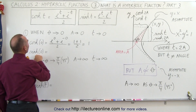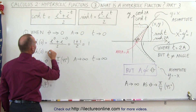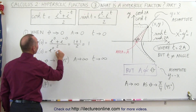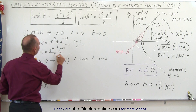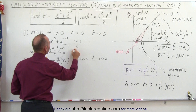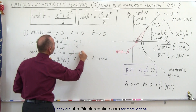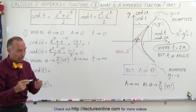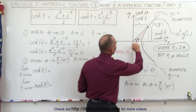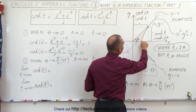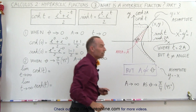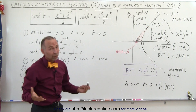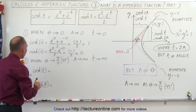Doing the same for the hyperbolic sine, this is equal to e to the 0 minus e to the minus 0 — which is still e to the 0 — divided by 2, which is equal to 1 minus 1, divided by 2, which is equal to 0. That's exactly what we expected: when we let the angle go to 0, the area goes to 0, and we'll be right on the x-axis, so the y-coordinate will indeed be equal to 0.